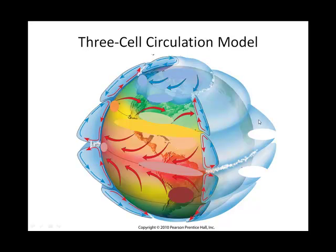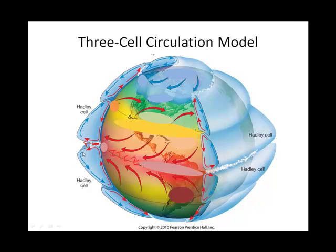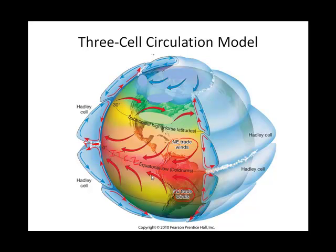Looking again at the three-cell model: the Intertropical Convergence Zone is where air ascends and creates the two Hadley cells. At about 30 degrees, air descends and produces the easterly trade winds at the surface — northeasterly in the northern hemisphere and southeasterly in the southern hemisphere. The descending air also warms, creating unusually warm conditions. At the tip of the Hadley cell is where we find the horse latitudes, where sailors once threw horses overboard.